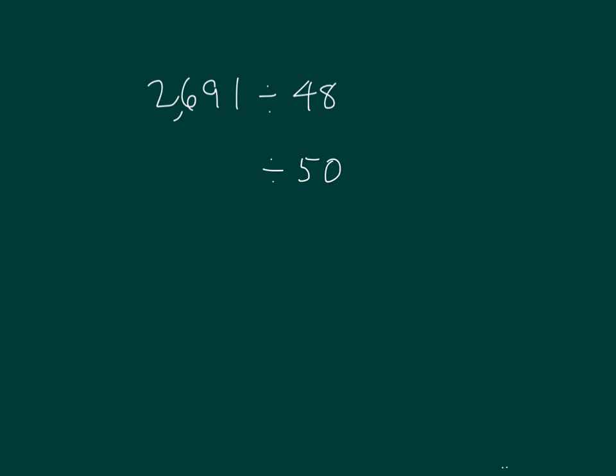Let's round 2,691 so it is easy to divide by 50. Remember, you can think of multiples of 5 to help you. I have an easy fact that 5 times 5 equals 25. You could round it either 2,500 or 3,000. Let's go to 2,500.